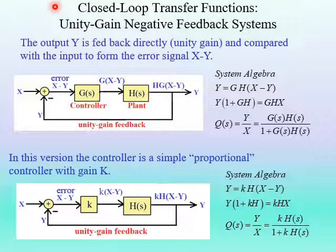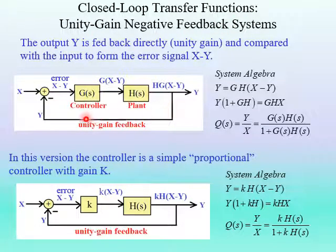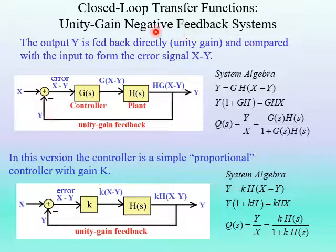Let's look at the closed-loop transfer functions for these feedback systems — we're going to do some system algebra. The first example uses unity gain negative feedback systems, meaning the output Y is fed back directly without any change in the signal. We're multiplying the output by one — that's what we mean by unity gain. And since this is a negative feedback system, there's a minus sign, so we're effectively multiplying by negative one.